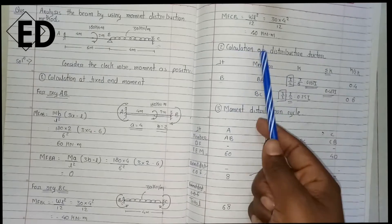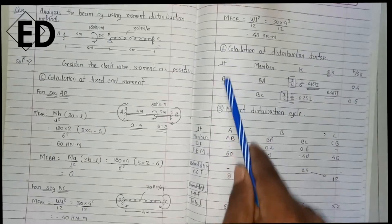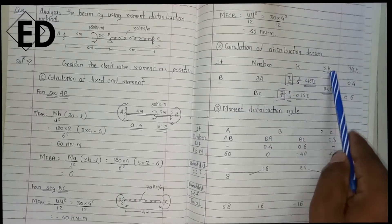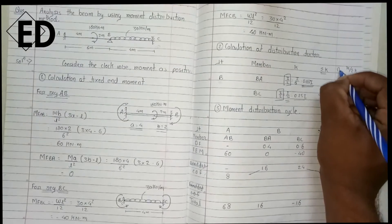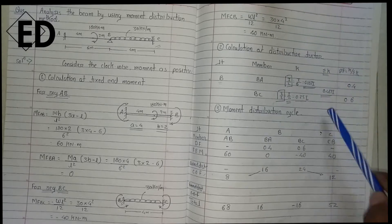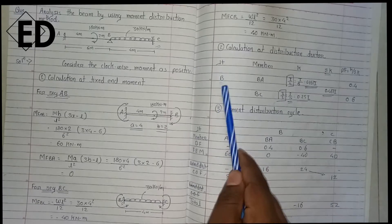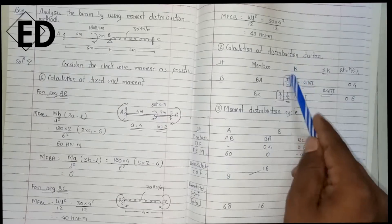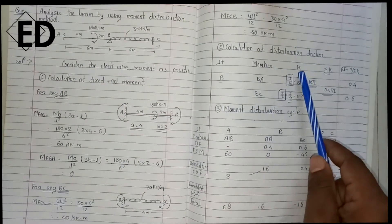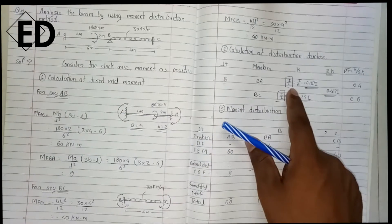Now the second step is the calculation of the distribution factor. For calculating the distribution factor we arrange it in tabular form with columns: joint, member, rotational stiffness K, summation of rotational stiffness, and distribution factor. The distribution factor is nothing but the ratio of the rotational stiffness to the sum of the rotational stiffnesses at the joint. In this question there is only one joint, B, with members BA and BC.